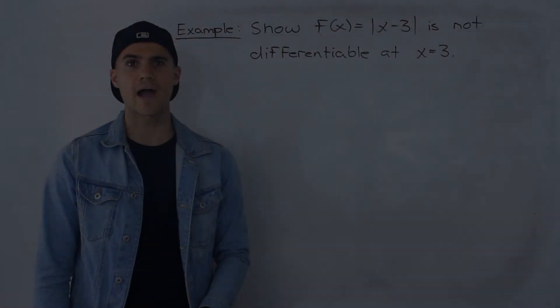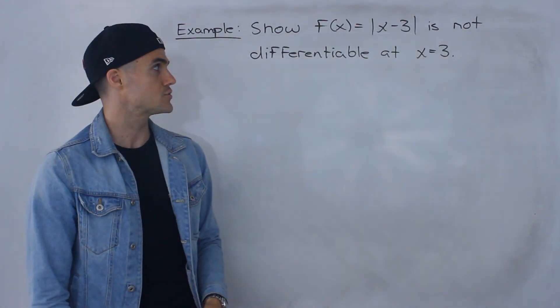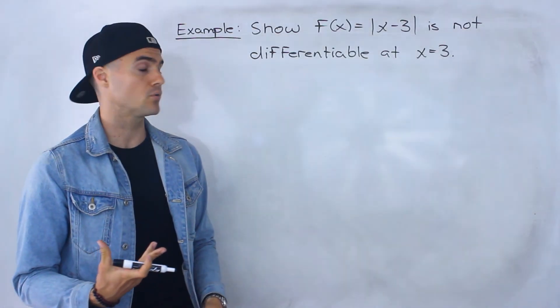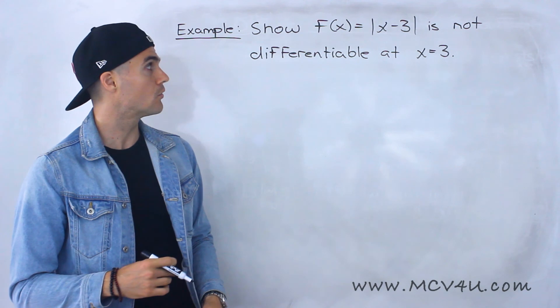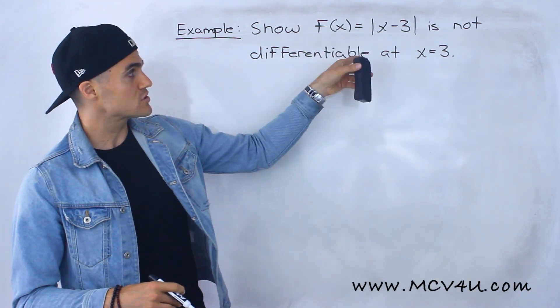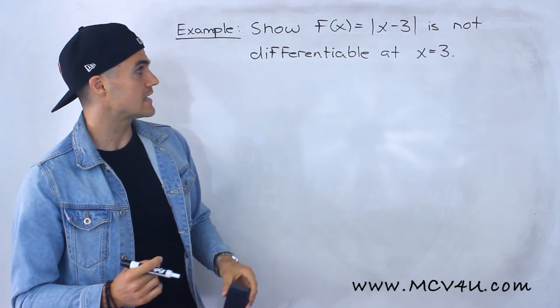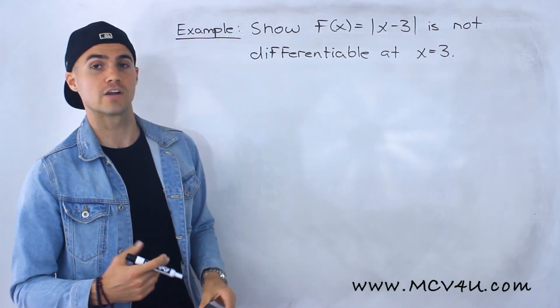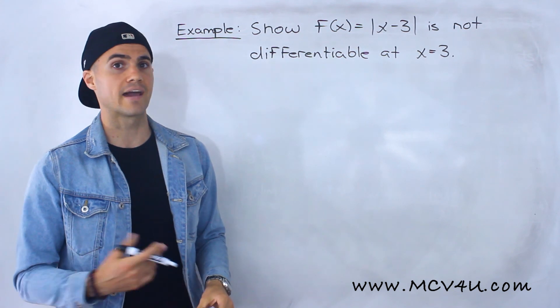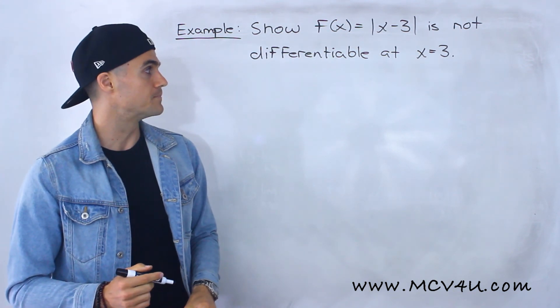What's going on everyone? Welcome back. Patrick here, and moving on to an example, we have to show the function absolute value of x minus 3 is not differentiable at an x value of 3.